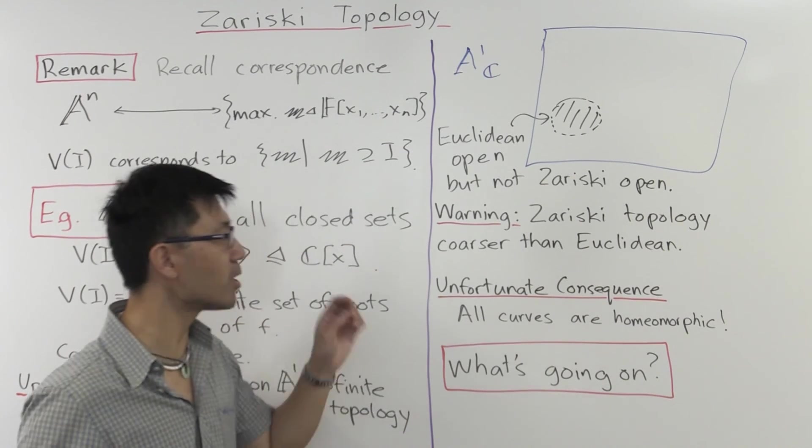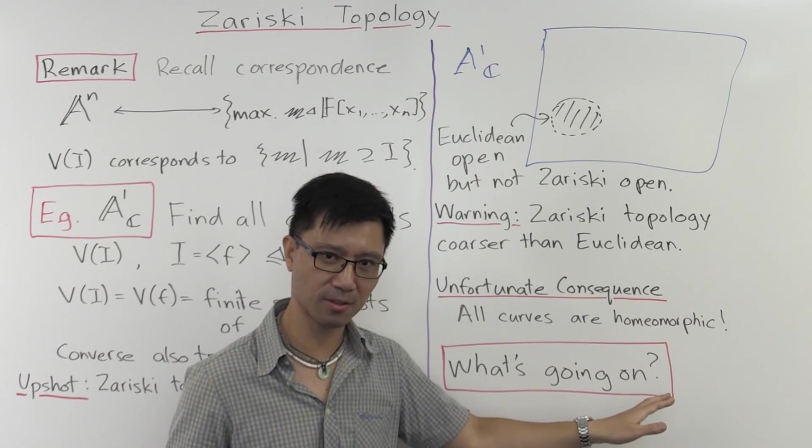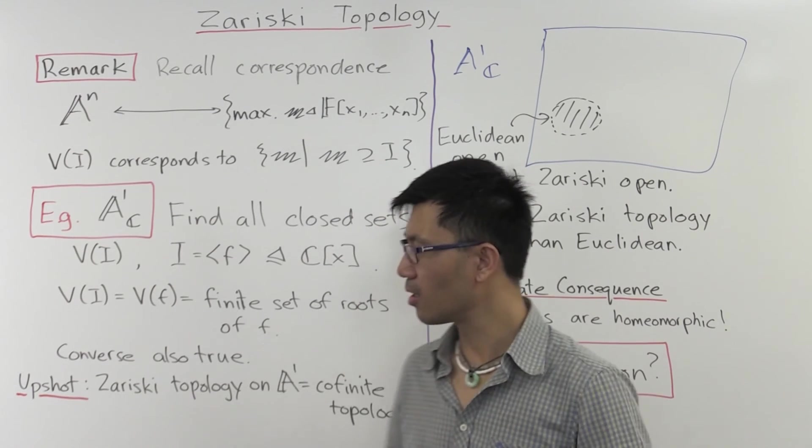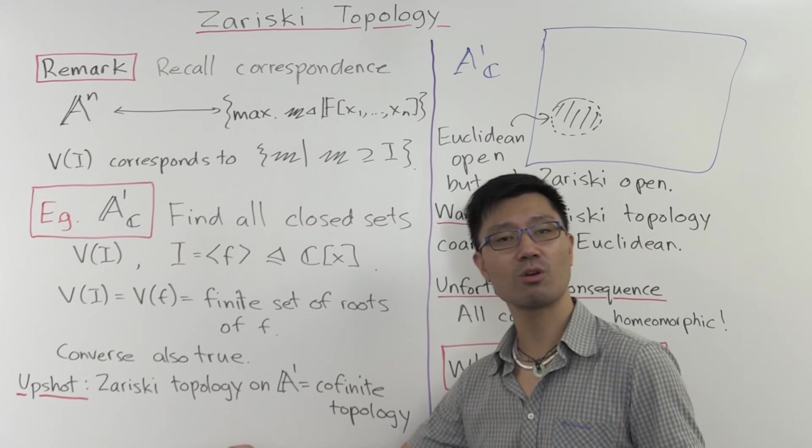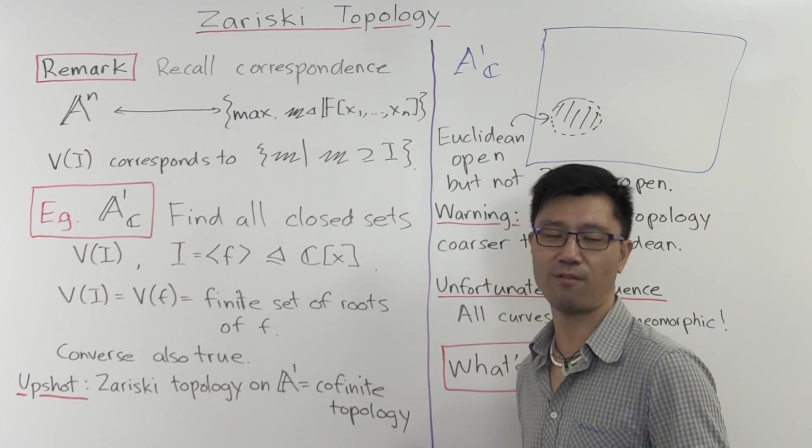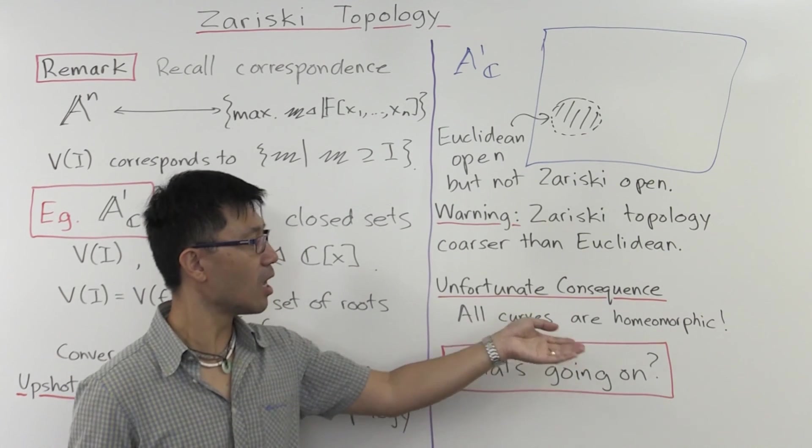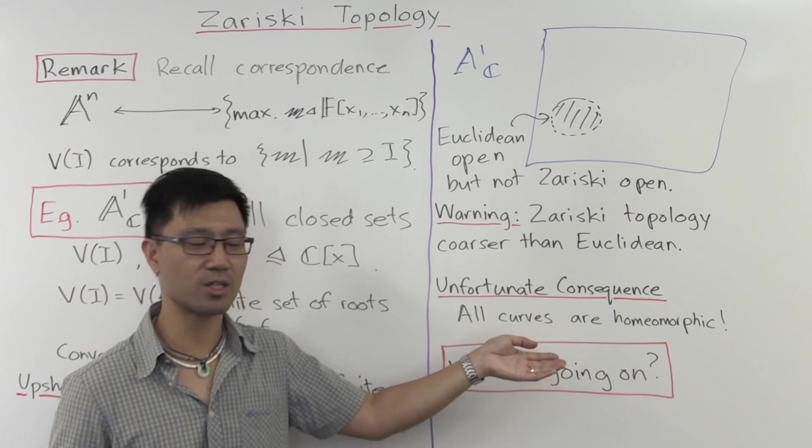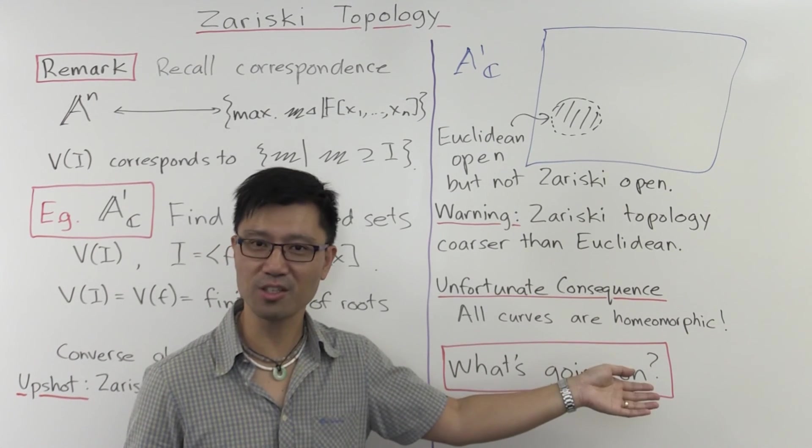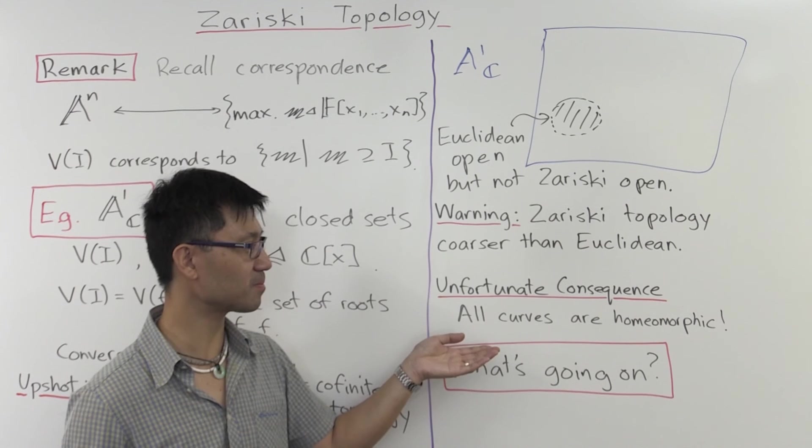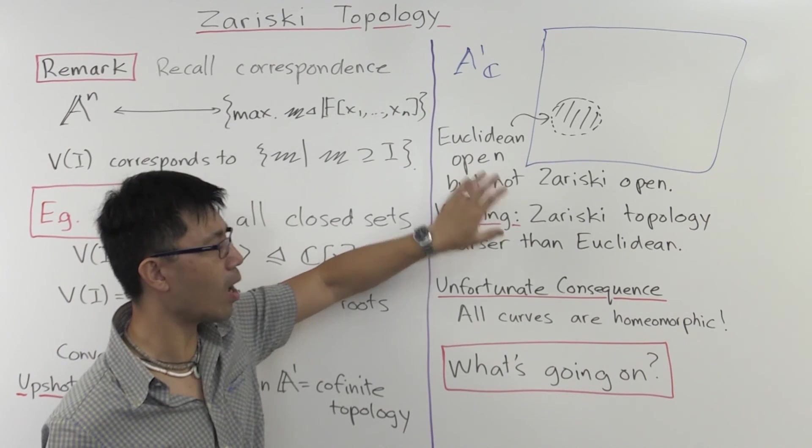And in fact, this has a much more unfortunate consequence, and that is that all curves are actually homeomorphic. In fact, you can show that for curves, you have a similar description of the Zariski topology. It's just a co-finite topology. And for curves, it's also true that they have the same cardinality. So if you have the same cardinality as sets, and you have the co-finite topology, they have to be homeomorphic. So that's a very unfortunate consequence.